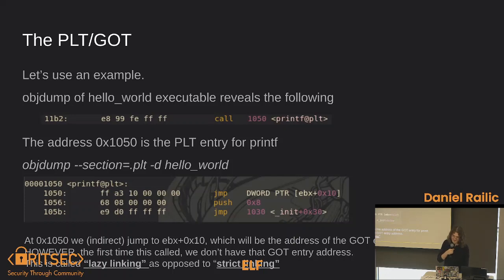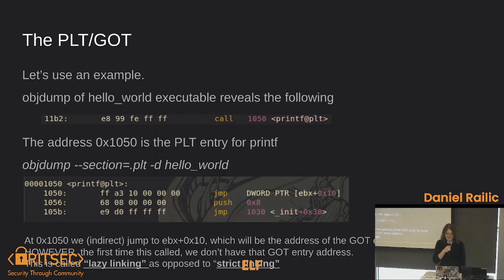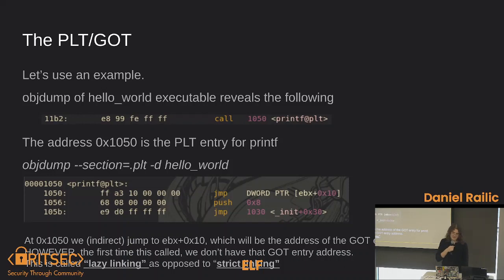The PLT/GOT table. Using a basic hello world program — just int main with printf — printf is not defined inside hello world. So object dumping hello world, we see it's calling 'printf@plt.' The address 0x1050 is the PLT entry for printf. If we dump the PLT section, we go to 0x1050 and see it's just a jump to another place. Then we jump somewhere else. What's the deal? We're jumping to the GOT — the global offset table entry point for printf.